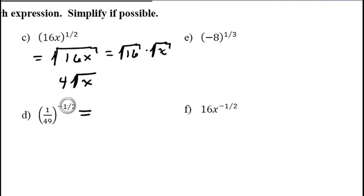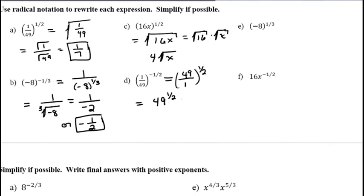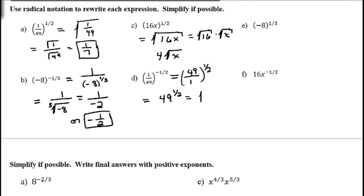For (1/49) to the negative 1/2: the negative exponent means we flip 1/49 upside down to get 49, and the 1/2 power means we take the square root. The square root of 49 is 7. For negative 8 to the positive 1/3: that's the cube root of negative 8, which is negative 2.